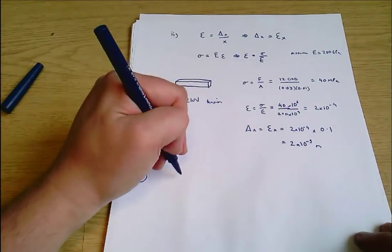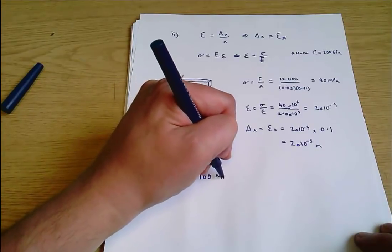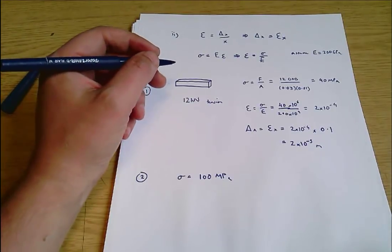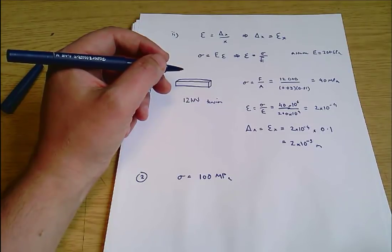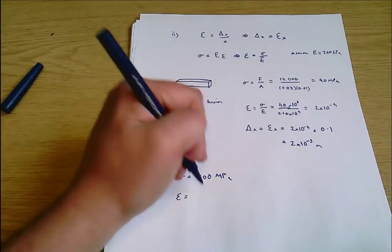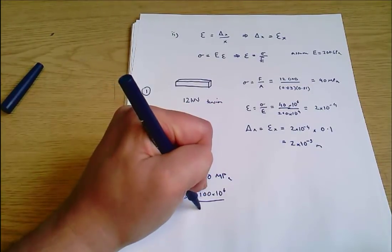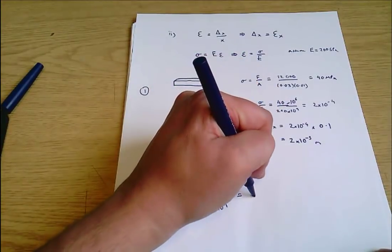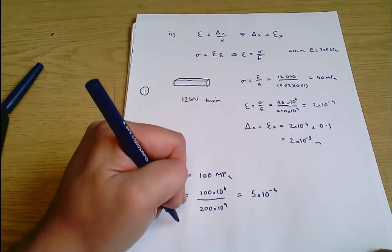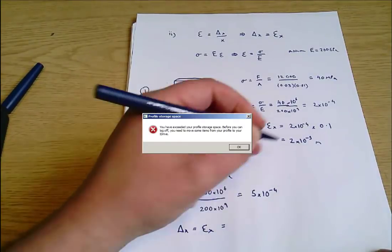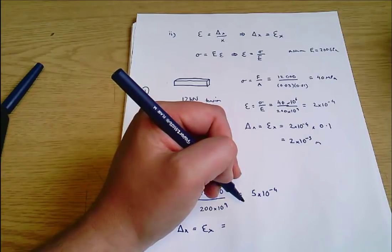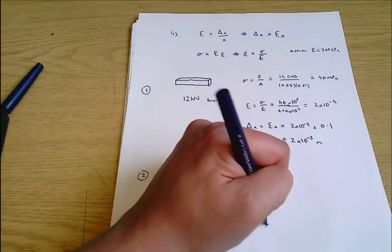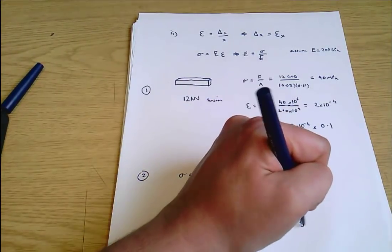In section 2, we know sigma equals 100 megapascals — that was calculated in the first part of the question. So epsilon equals 100 times 10⁶ divided by 200 times 10⁹, which is 5 times 10⁻⁴. Delta-x equals epsilon times x, which is 5 times 10⁻⁴ times 0.1, equalling 5 times 10⁻⁵ metres.